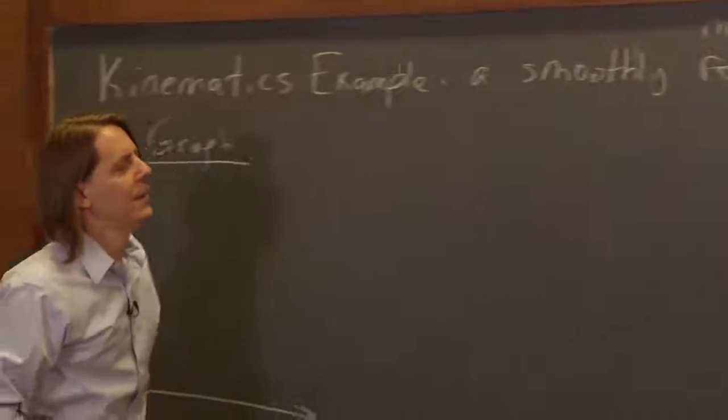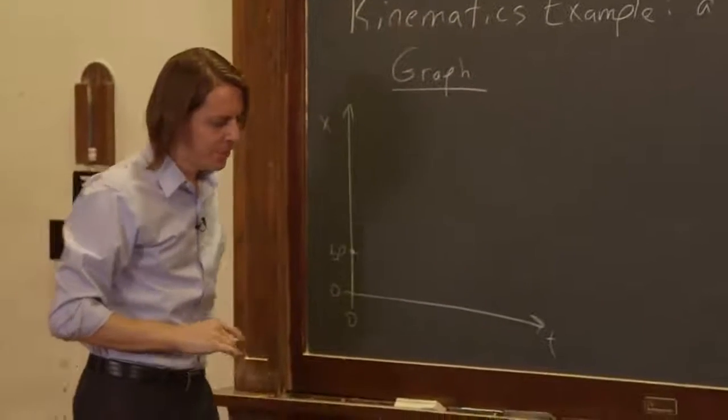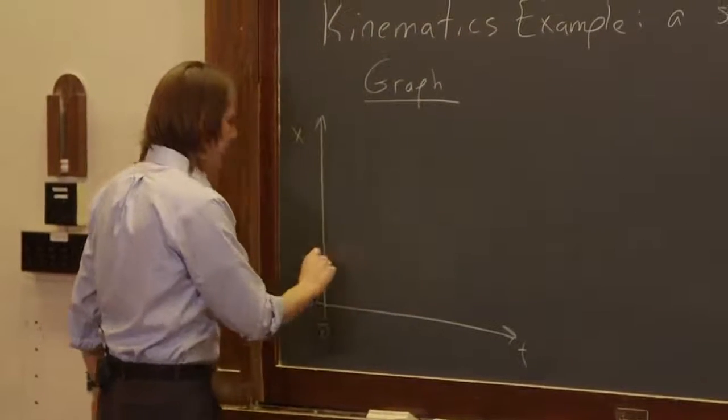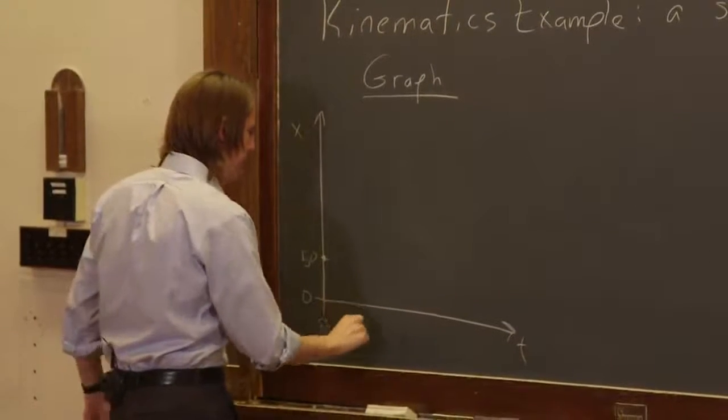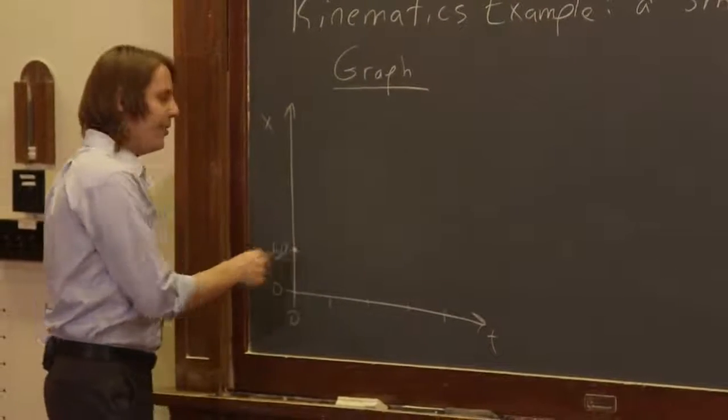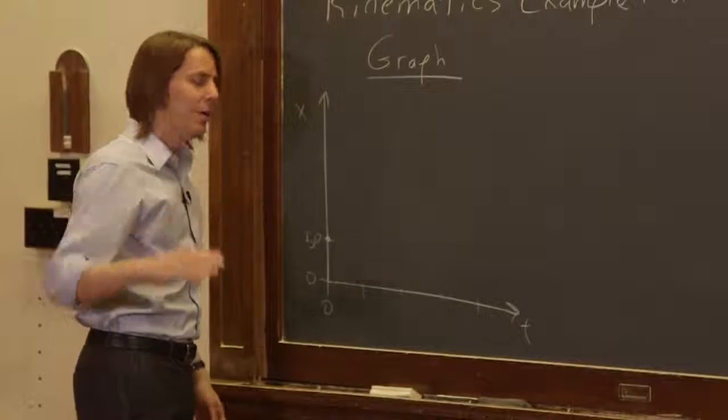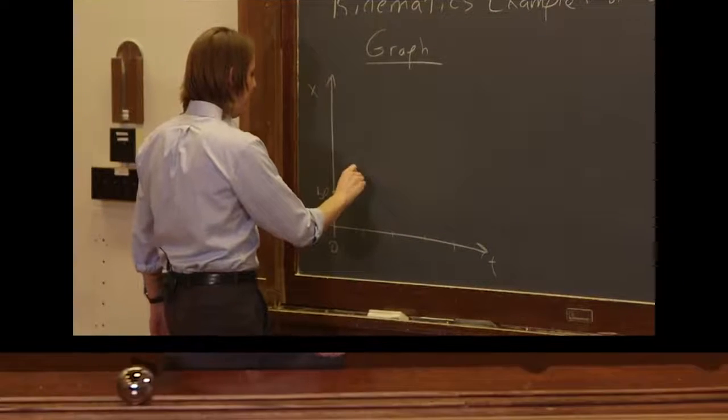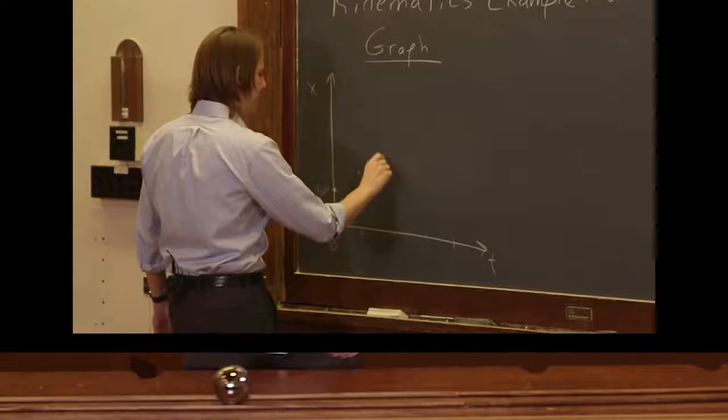So this is our very first model. Rather than having a rolling ball, let's just say it's a smoothly moving ball and not worry about the rolling. Now let's think about what this graph would look like. Here are some even points in time.